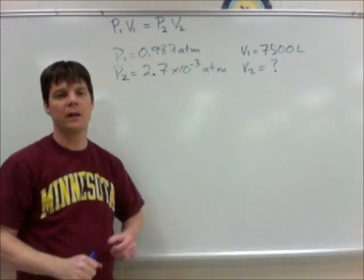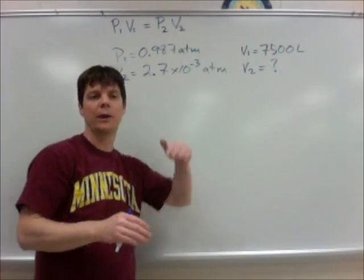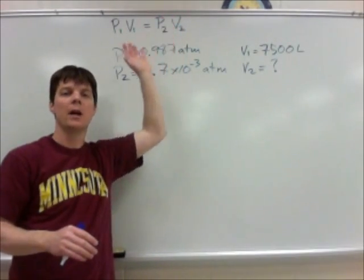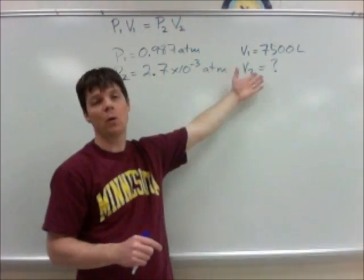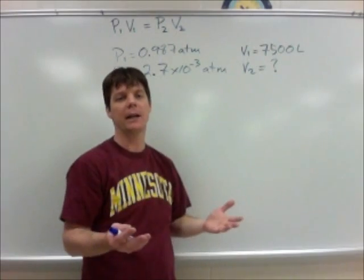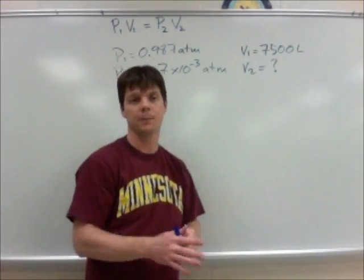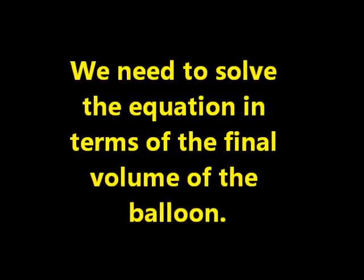Finally, we can see that V2 is the volume that the weather balloon is going to have as it reaches a higher altitude. This is what we're trying to find, so I'm just going to write in a question mark indicating that this is what I would like to solve for.